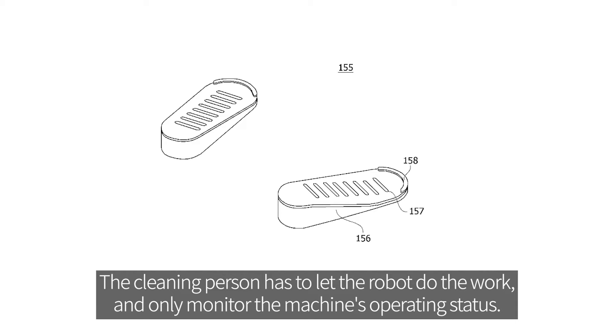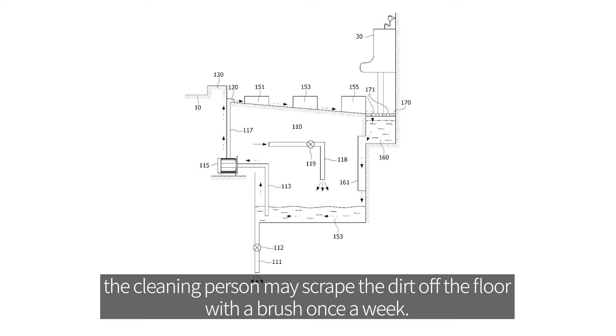The cleaning person has to let the robot do the work and only monitor the machine's operating status. After soaping the floor around the urinal, the cleaning person may scrape the dirt off the floor with a brush once a week.